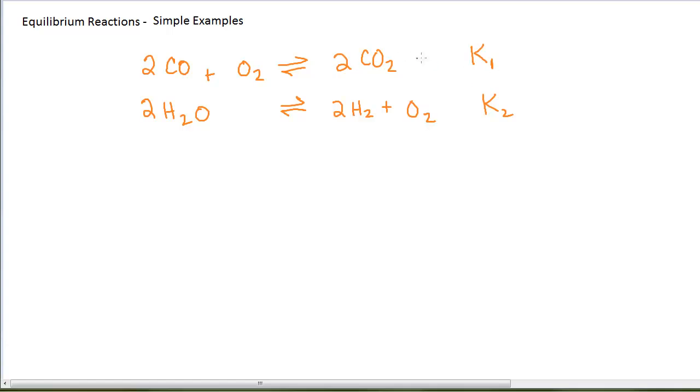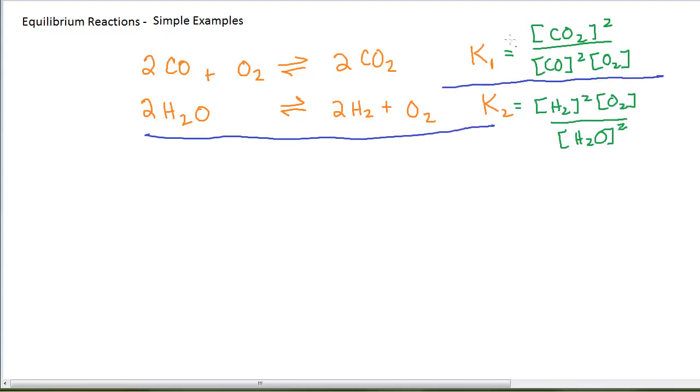I have K1, which is the equilibrium constant for this first expression, and K2, which is the equilibrium constant for the second reaction. Their formulas would be... I do not have two equilibrium constants that are related to each other. I have equilibrium constants for two separate reactions.